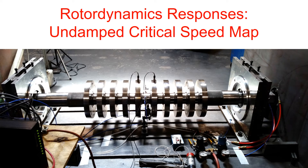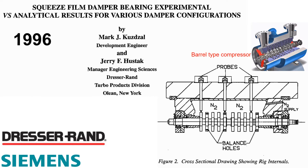Hi everyone, today I'm going to cover the undamped critical speed map and how it is analyzed and interpreted. To give you a better example, I'm going to use a rotor layout from a very interesting paper written by engineers at DresserRand in 1996. Please note that DresserRand company was bought by Siemens around 2015.